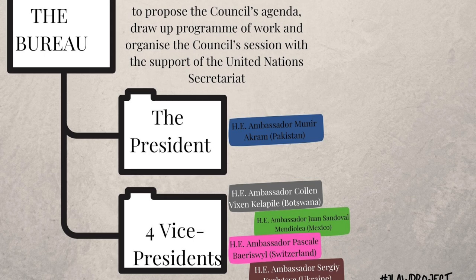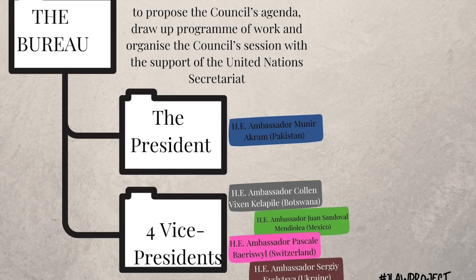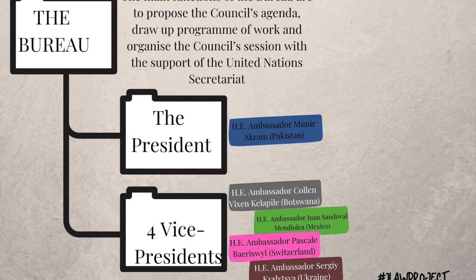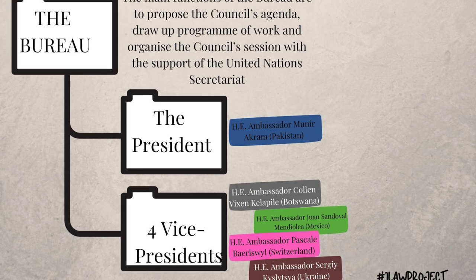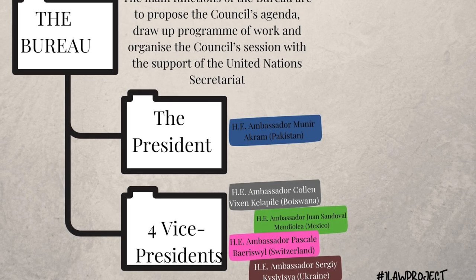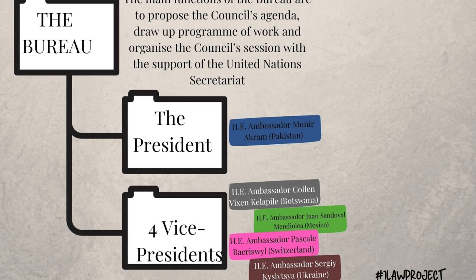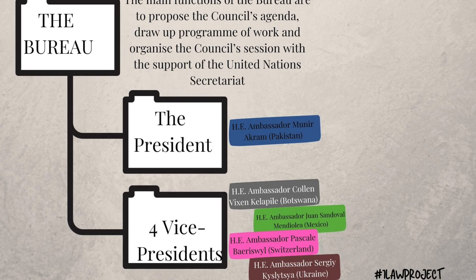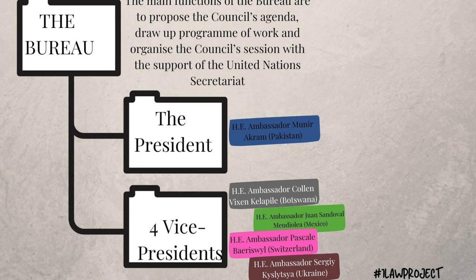To fulfill its mandate as described in the United Nations Charter, the council works through subsidiary bodies which include regional ECOSOC commissions, functional commissions, expert bodies of governmental experts and experts serving in their individual capacity, standing committees, other related bodies, and ad hoc bodies. These subsidiary bodies assist the council in reviewing thematic or region-specific issues.